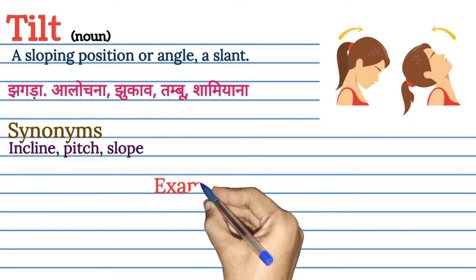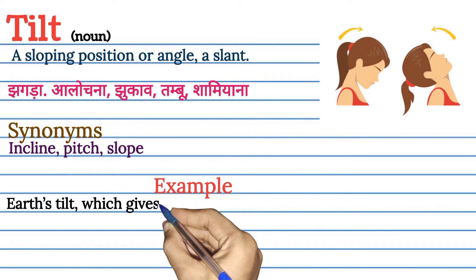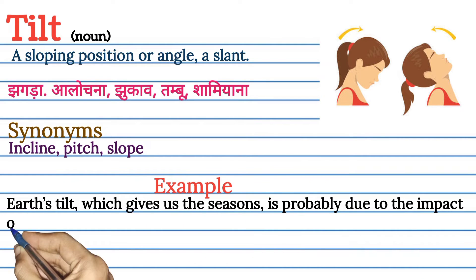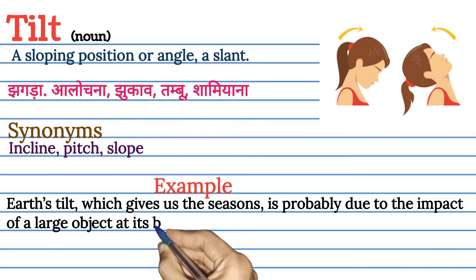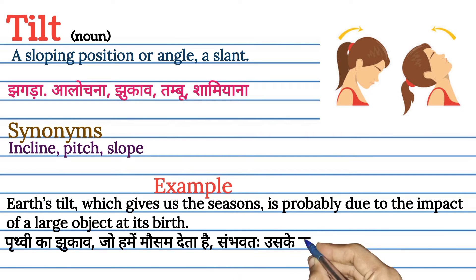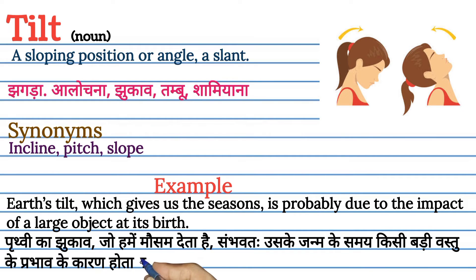Tilt used in a sentence: Earth's tilt, which gives us the seasons, is probably due to the impact of a large object at its birth. Prithvi ka jhukav, jo hume mausam deta hai, sambhavta uske janm ke samay kisi badi vastu ke prabhav ke karan hota hai.